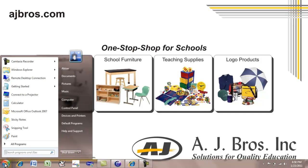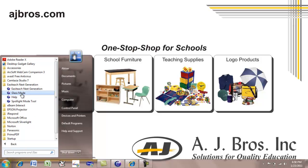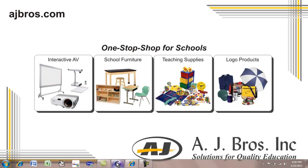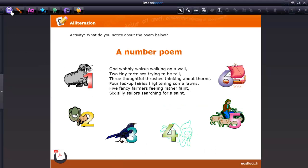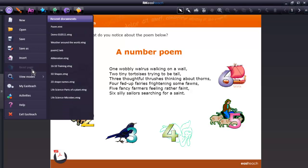There are two ways of starting the glass mode and the spotlight mode. One is through the Start menu, All Programs, EasyTeach Next Generation, and then you can click on either glass mode or spotlight mode. The second method is from within EasyTeach: click on the EasyTeach menu, click on View Modes, and then you can go to the glass mode or the spotlight mode.